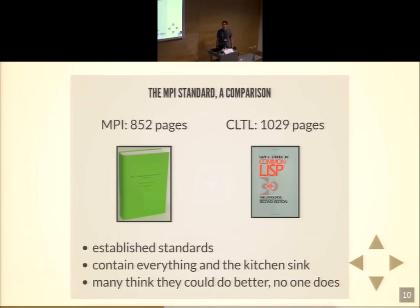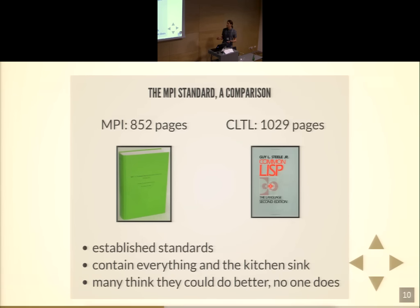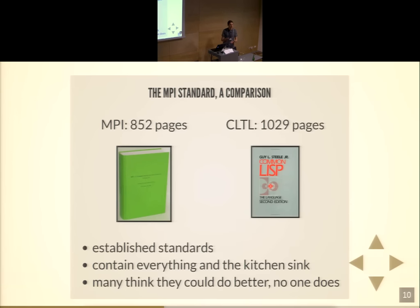When I looked at the MPI standard, I realized it's surprisingly similar to Common Lisp in several aspects. The first is that it's enormous — it contains everything including the kitchen sink, because it aims to be a standard and has to accommodate strange things that some vendors demand. However, the people involved are really intelligent, so it's a great standard, but it's enormous. In both domains you have people complaining that things should be done better, but it's still the established standard. It's actually quite similar — a message passing standard that just describes how to send a message.